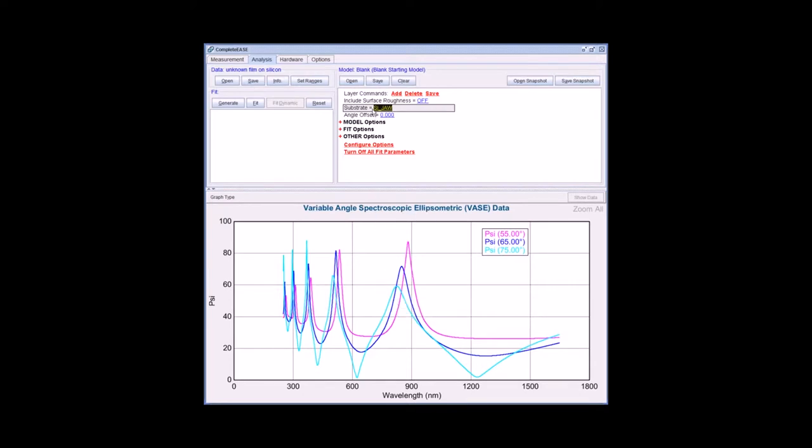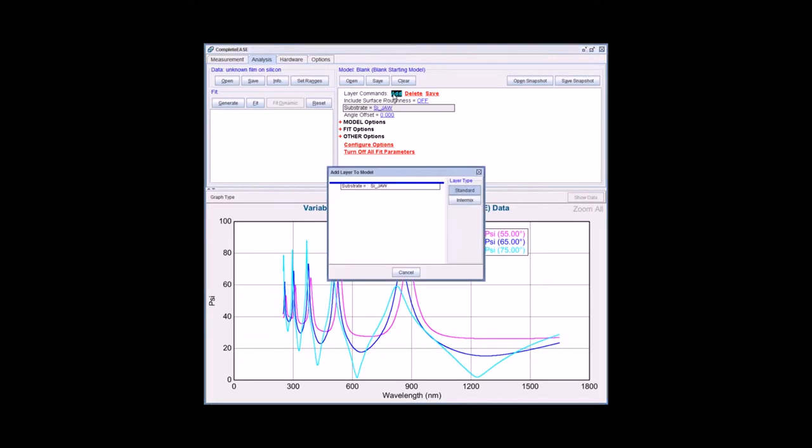After we have the substrate entered, we can add a film using the layer command add. This brings up the add layer to model window. I can position my cursor above or below the substrate. Position it above the substrate and click once.